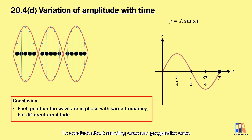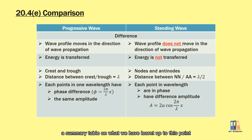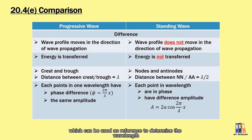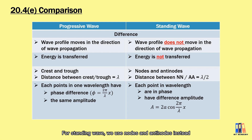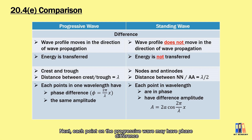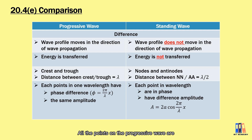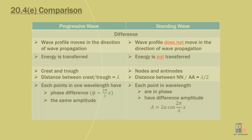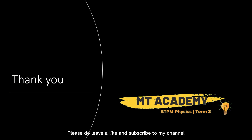To conclude, I have prepared a summary table comparing standing waves and progressive waves. In a progressive wave, we use crests and troughs to determine wavelength, while in a standing wave we use nodes and antinodes. All points on a progressive wave vibrate with the same amplitude, which does not occur in a standing wave. Please read through the table, and if you have any questions, leave them in the comments. Please like and subscribe — I will see you in the next video. Thank you.